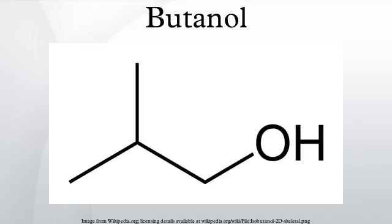Isomers: the unmodified term butanol usually refers to the straight-chain isomer with the alcohol functional group at the terminal carbon, which is also known as n-butanol or 1-butanol.